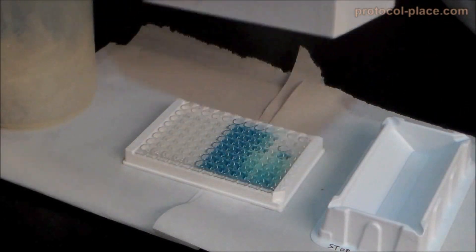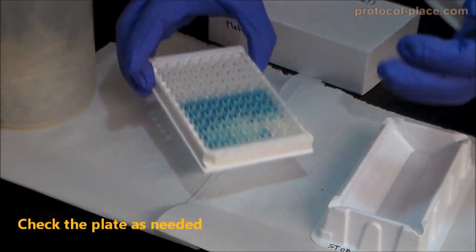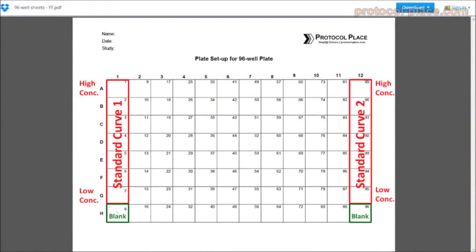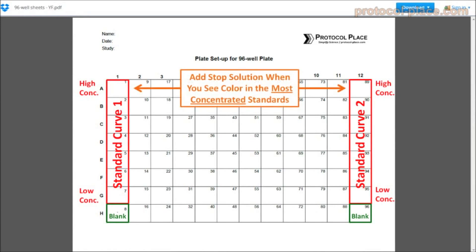Incubate the plate as directed by the manufacturer and check the plate as needed to ensure that it doesn't get overdeveloped. As a rule of thumb, you should immediately proceed to the next step of adding stop solution to the plate if you can see any color change appearing in the most concentrated standards present in your standard curve.